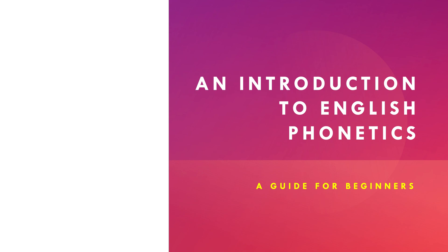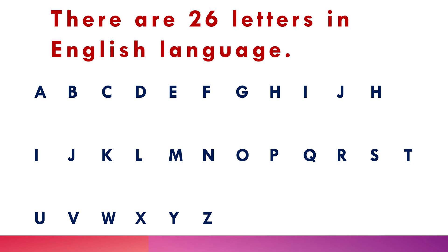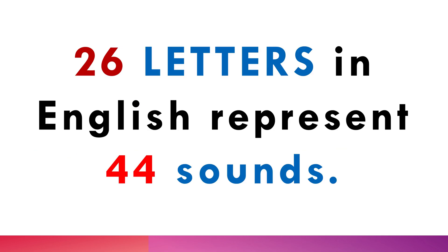Hello and welcome to the subject of an introduction to English phonetics — a guide for beginners. There are 26 letters in the English language, from A to Z. These 26 letters represent 44 sounds, so remember: we have 26 letters in English, but we have 44 sounds.